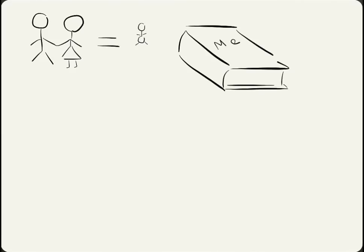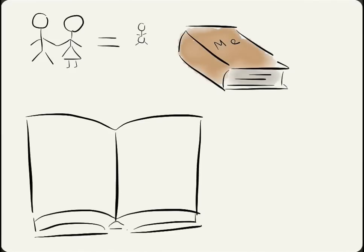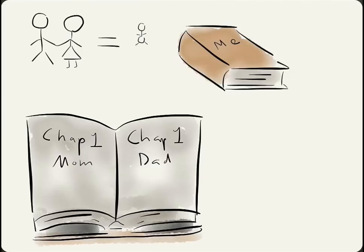Each genome is like a book where the chromosomes are the chapters. Each chapter is either from the mother or the father, but not both.